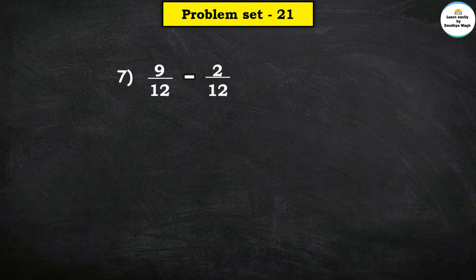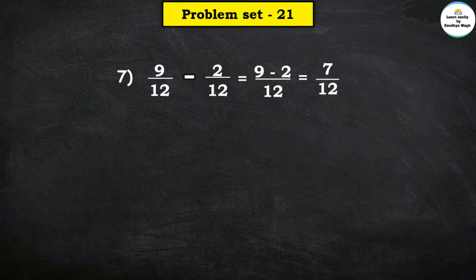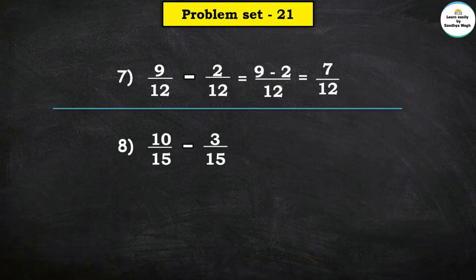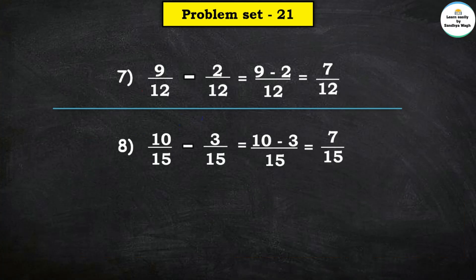Number 7: 9 upon 12 minus 2 upon 12. The common denominator is 12 and the numerators are 9 and 2, so let us subtract 2 from 9. So 9 minus 2 is equal to 7, and the denominator is 12. The answer is 7 upon 12. Next: 10 upon 15 minus 3 upon 15. So 10 minus 3 is equal to 7, and the denominator is 15. The answer is 7 upon 15.